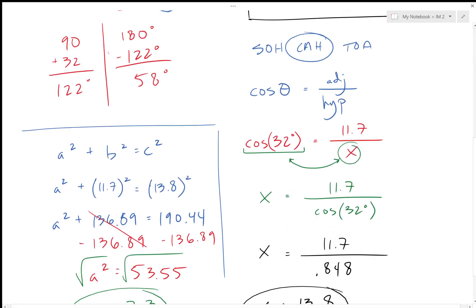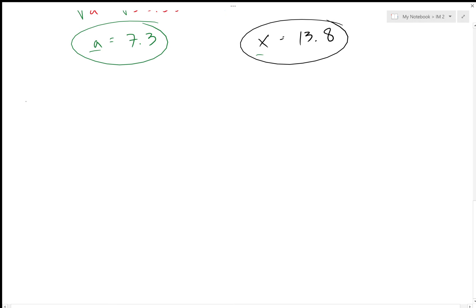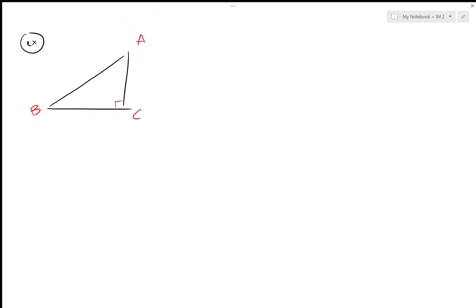Alright, one more example. Again, another right triangle. A, B, C, always give us that 90 degree angle.